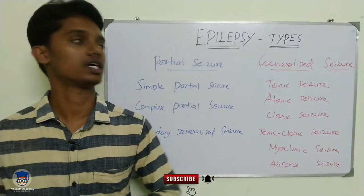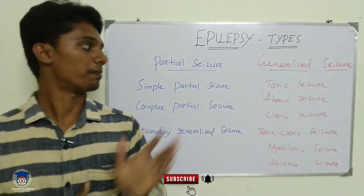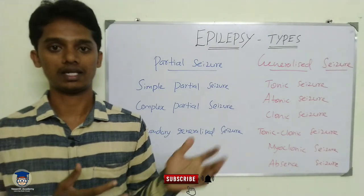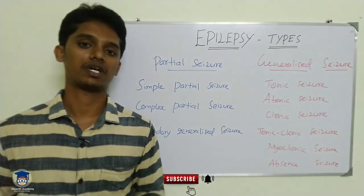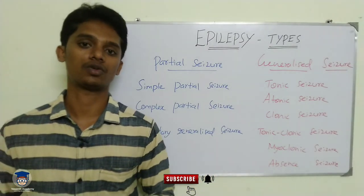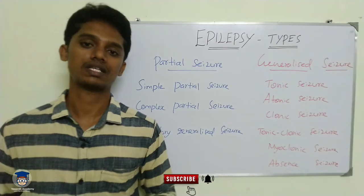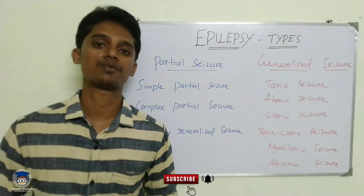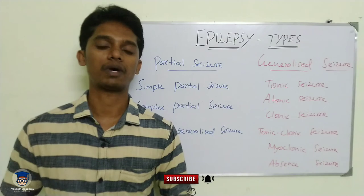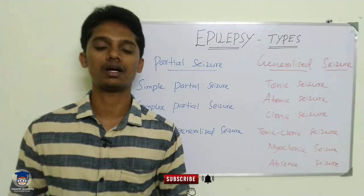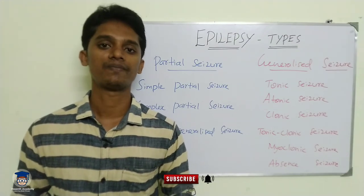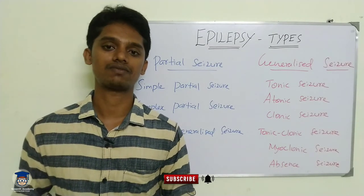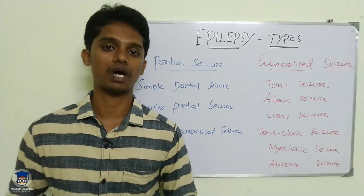These are all the types of epilepsy. We have two categories — partial and generalized — with their respective subtypes. In the next class, we will talk about anti-epileptics pharmacology. Share this class with your friends, subscribe to our channel, and you will be notified of the next video. I will see you guys in the next video. Until then, bye from Vasanthi.